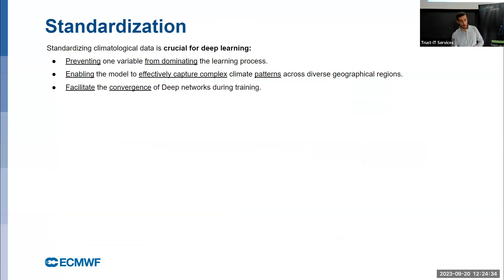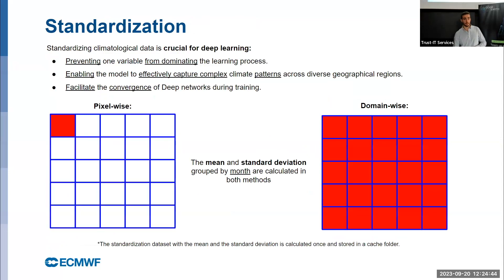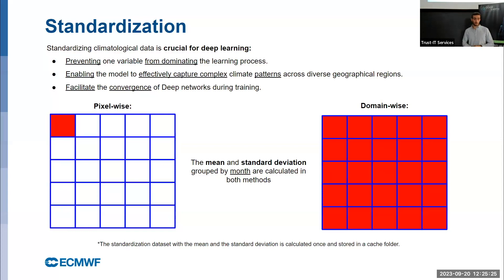A key topic for these modeling techniques is standardization, and this is probably the main difference between our case and the computer vision literature. In classical computer vision we always work with RGB images, so normalization is straightforward. Here we work with different meteorological variables and different data, so standardization plays a very important role. We considered two types: in both, we compute the mean and standard deviation for each month in the training period. In pixel-wise standardization we compute those statistics per pixel; in domain-wise standardization we compute a single value for the whole domain.